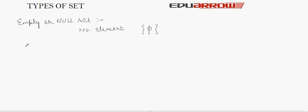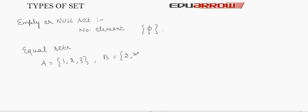Next are equal sets. Two sets are said to be equal if they have the same elements. For example, if set A is defined as {1, 2, 3} and set B is defined as {2, 3, 1}, since both sets have the same elements, A and B are equal sets because 1 equals 1, 2 equals 2, and 3 equals 3.